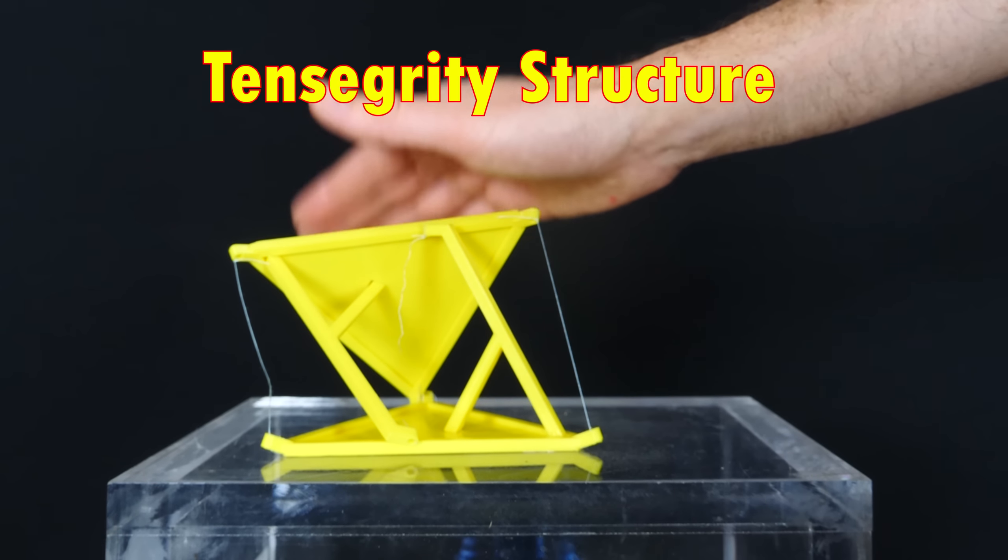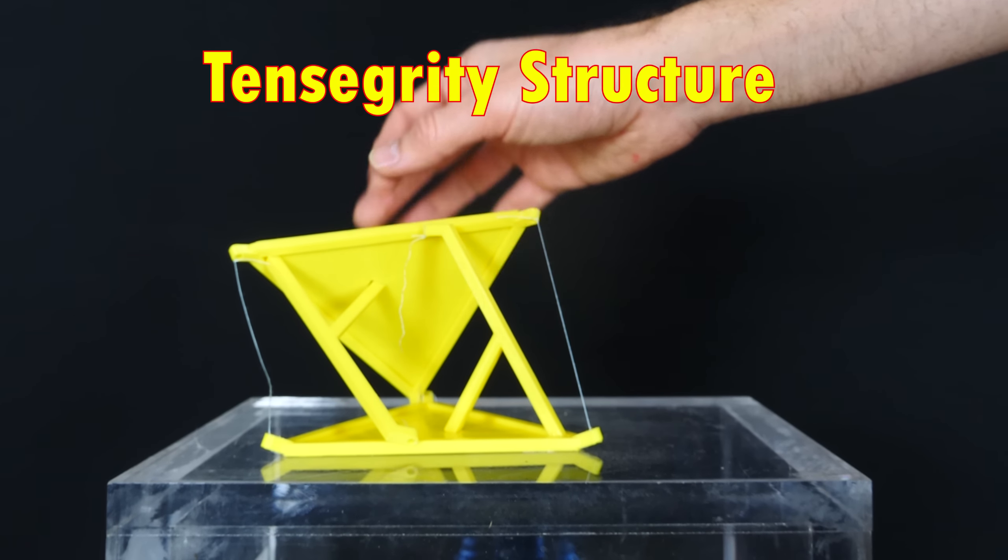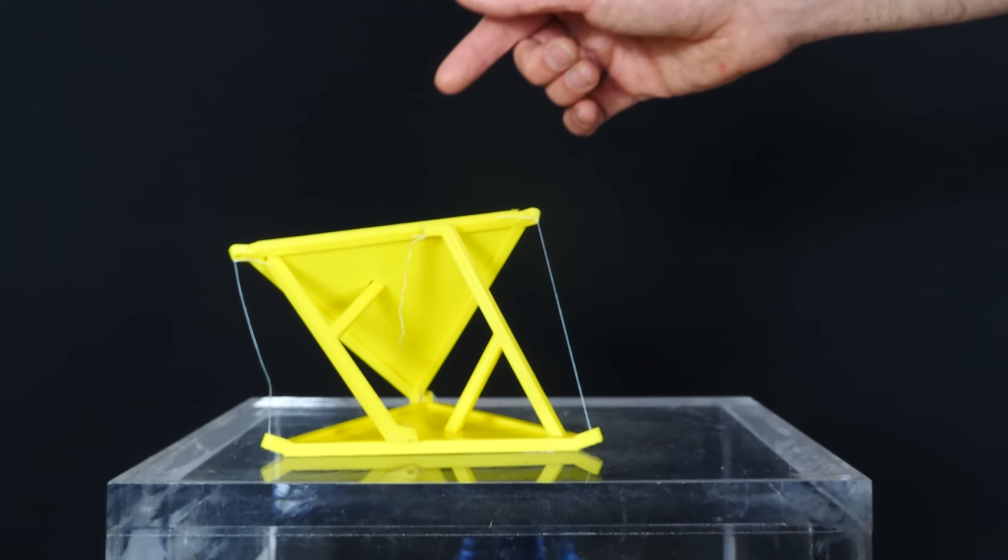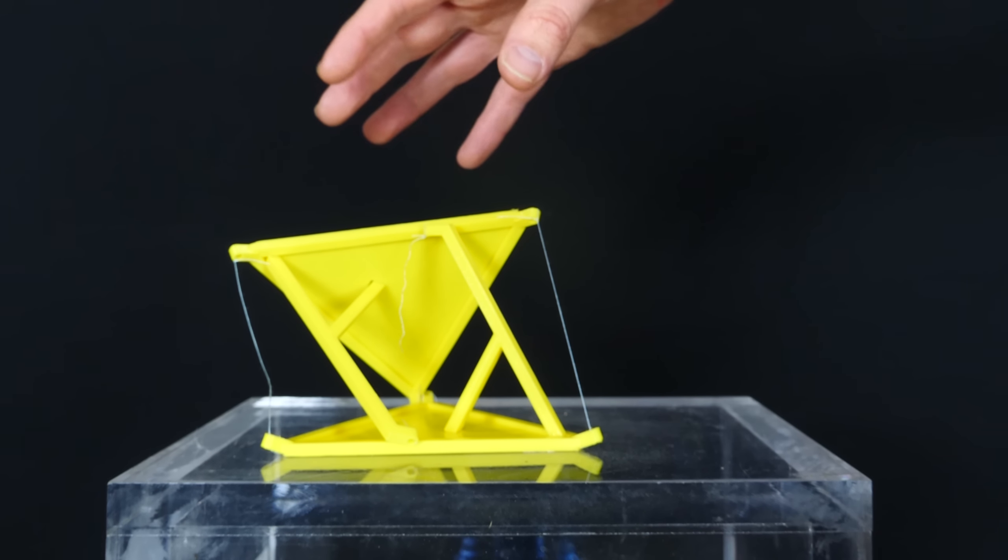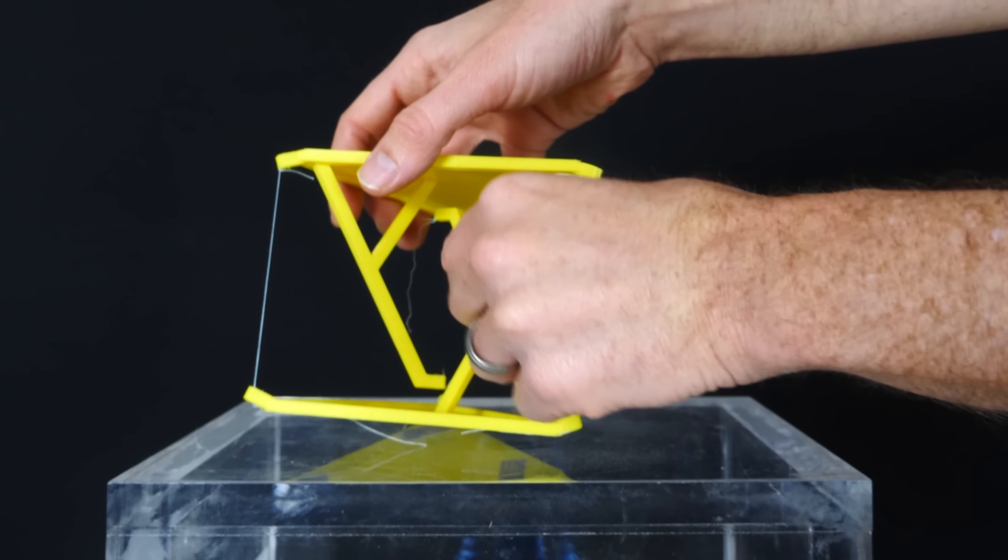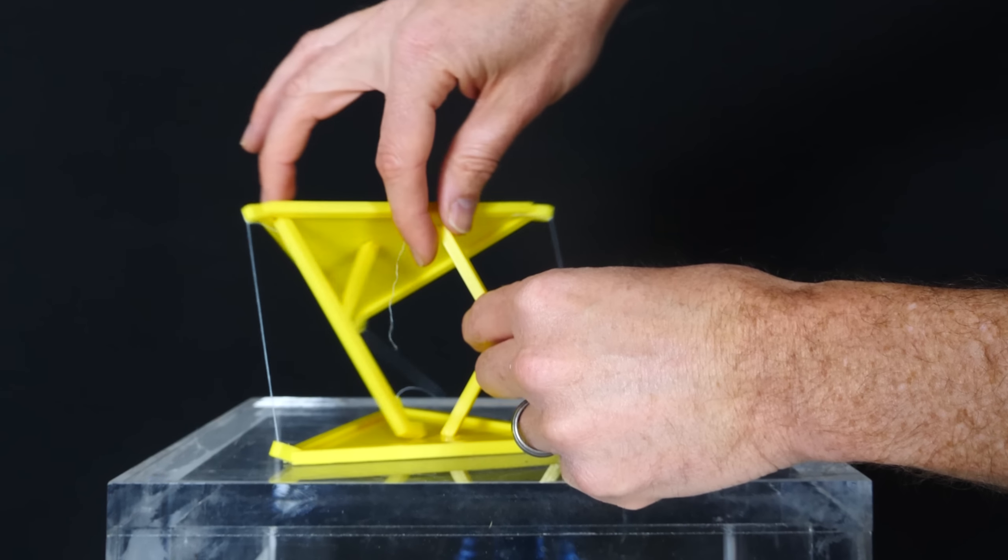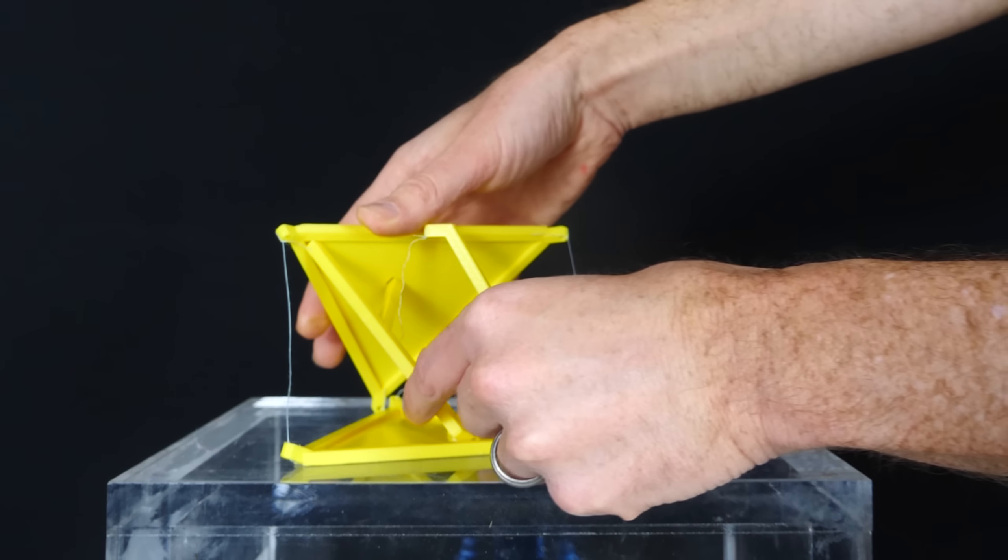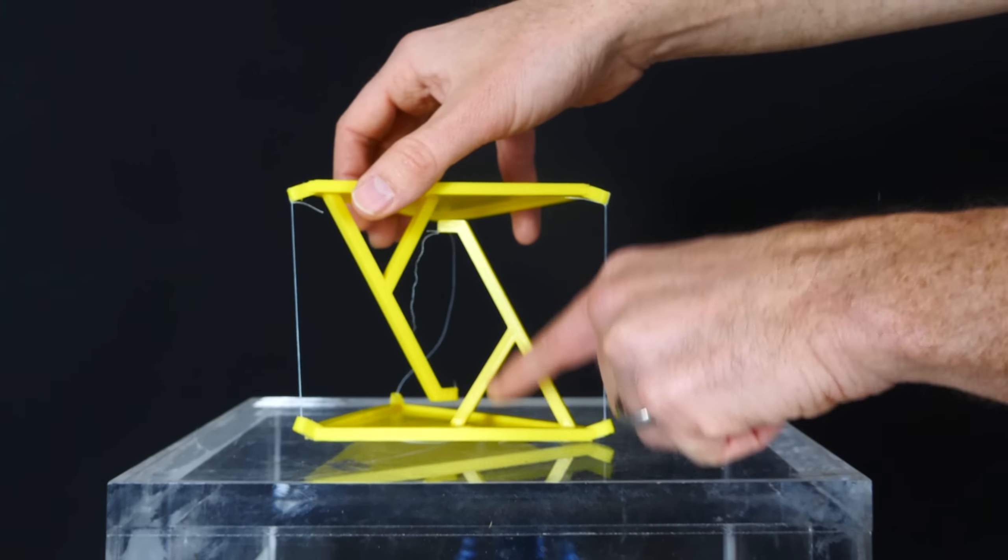Now this type of structure is called a tensegrity structure and relies on the tensile strength of the cords within it. It also relies on the compressive strength of the beams, but usually these compressed beams aren't touching each other. For example, in this one, these were under compression. You could notice that this one was slightly bending when we put weight on it. So it was under compression in parts of it, but they're not usually touching each other, so it appears to be floating.